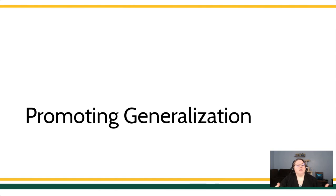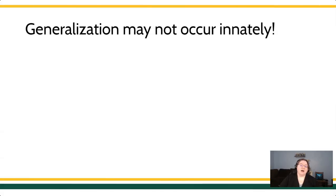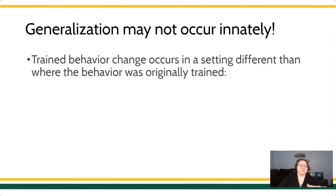This time around, let's talk about how do you get generalization — how do you make generalization happen? Remember that we think about generalization as being a very essential part of the human repertoire. We want people to be adaptable and flexible, to be able to get along in new environments. But generalization may not occur innately, and when people have a behavioral repertoire that does not generalize well, we might call them rigid or say they're having trouble adapting. When behavior occurs in a setting different from where it was originally trained, we're talking about generalization.